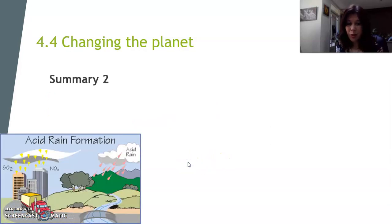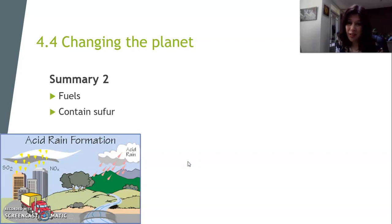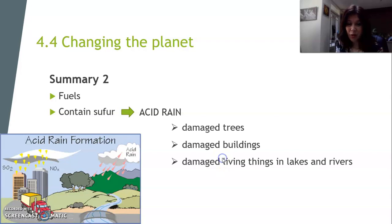Summary two: Some fuels contain sulfur, and sulfur can turn into acid rain. When acid rain rains down on Earth, it can damage trees, it can damage buildings, and it can damage all kinds of living things in lakes and rivers.